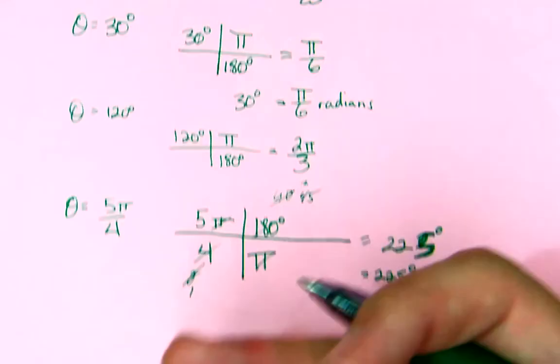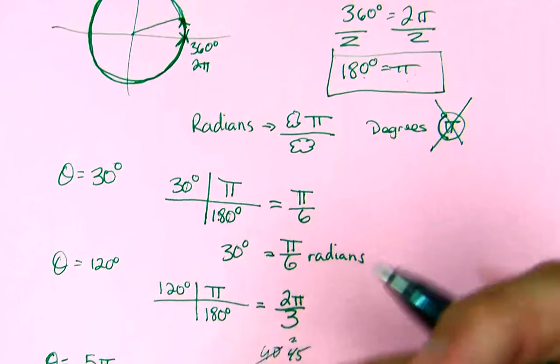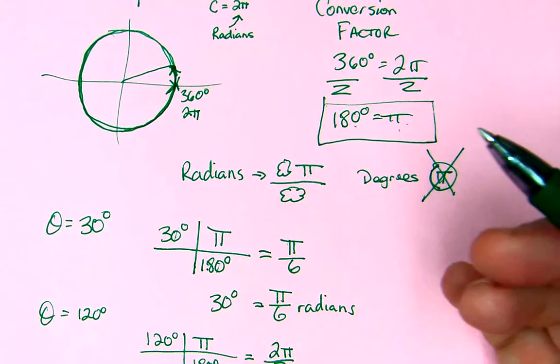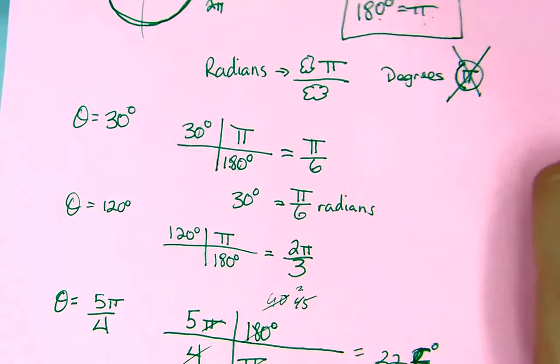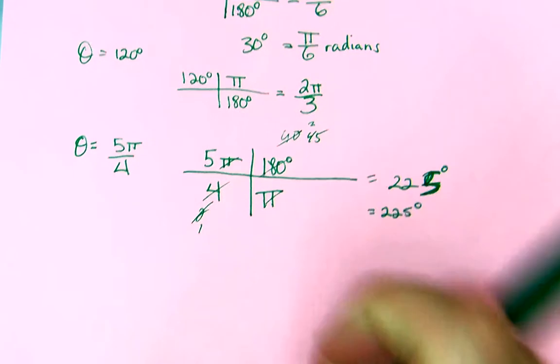Now, converting between the two of them should be one of the easiest things that you do. You've done this in chemistry. It's just 180 equals π. And, we use that conversion factor of 180 and π. Just one really quick step here.